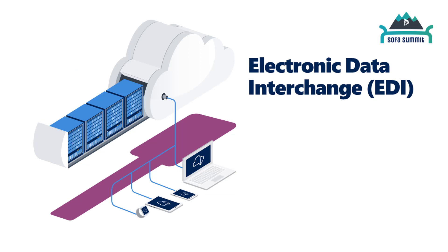EDI started in the 1960s in America in the automotive industry, where they wanted an easier way of passing business messages between different organizations — things like an order, an invoice, a shipment. That was pretty successful, and shortly after, the US government and the food and beverage industry jumped on the back of that and have used it ever since. Even today, automotive, aero, and food and beverage tend to be the main players around EDI.